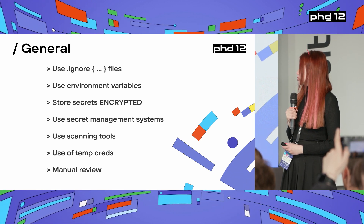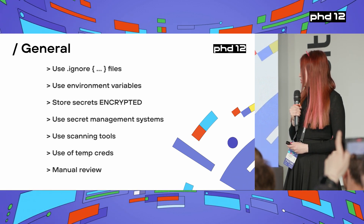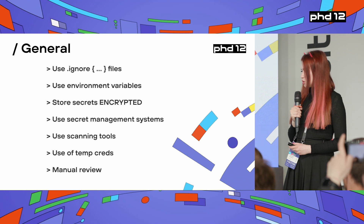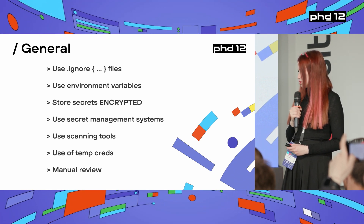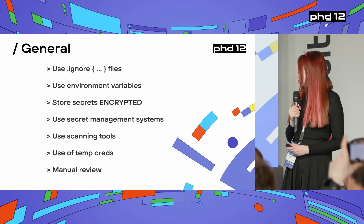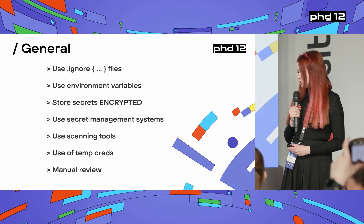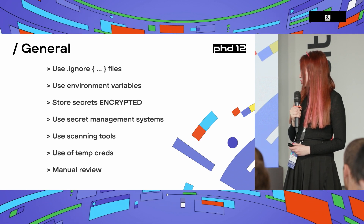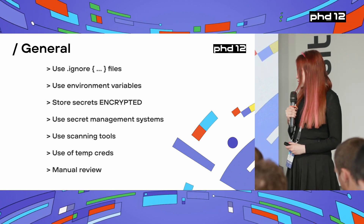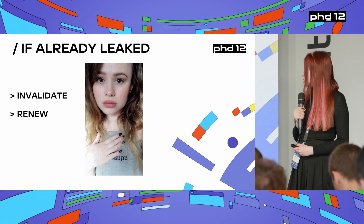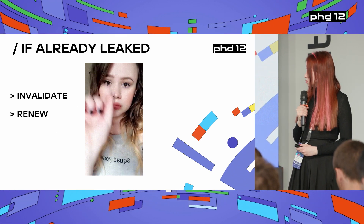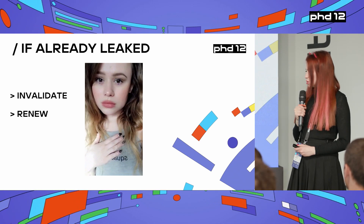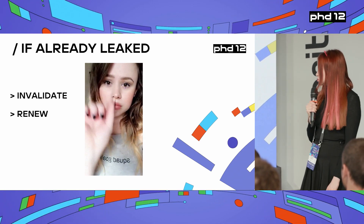Some general recommendations: use different ignore files, use environment variables, store secrets encrypted, use a secret management system, scanning tools, temporary credentials, and perform manual review. You should obviously not upload secrets to public storage platforms. The usage of temporary credentials is also very useful — and just be attentive and double check the code manually. If secrets have been leaked, you can't really do anything besides invalidate them and update them, and hope that the criminals were unable to use them.